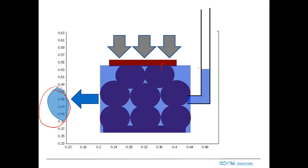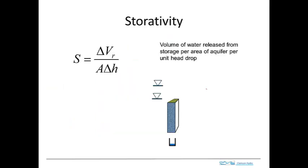When we drop the pressure, we have water come out of storage. Essentially, that's what we do with a well — we pump water out, drop the pressure, and that results in a reduction of the volume of water in the aquifer itself.